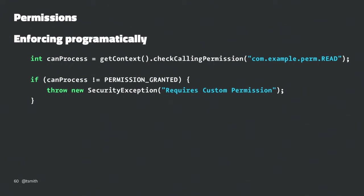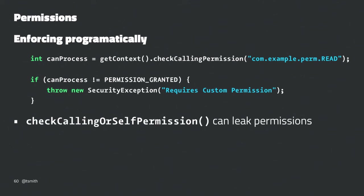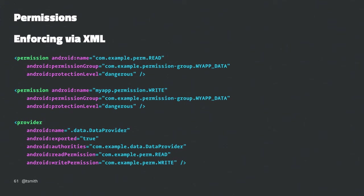We can call checkCallingPermission on a context to determine if the calling application was granted the required permission, throwing an exception if not. Note that it's easy to leak permissions with checkCallingOrSelfPermission because it also uses your own application's permissions if you've defined a custom permission. If instead you want to enforce the permission in XML, define it with the read permission and write permission — that manages it for you. On Marshmallow and up, you still need to prompt the user for acceptance. All components discussed today offer similar ways to define this in XML.